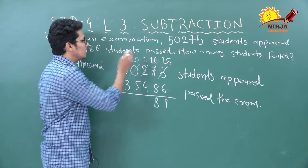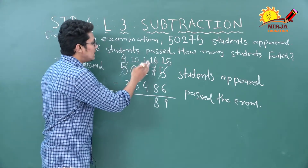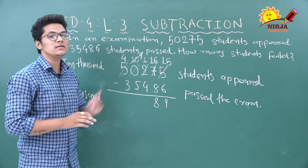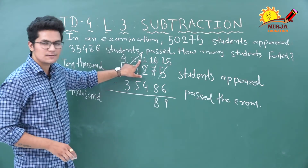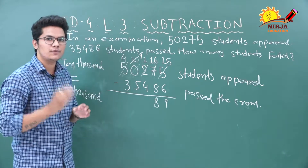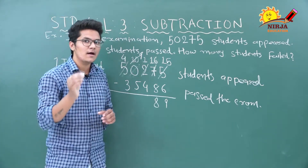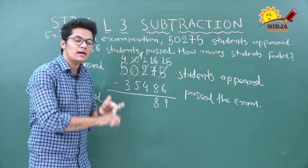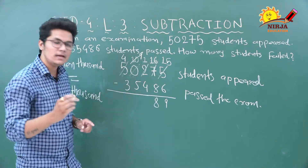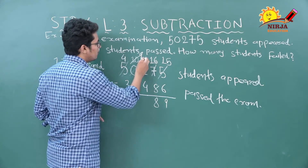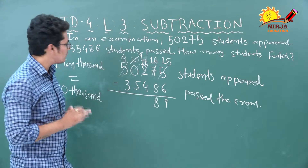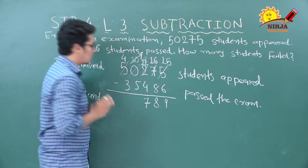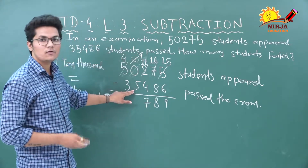Now we can borrow 1 thousand from the thousands column, leaving 9 thousands. One thousand equals 10 hundreds, and there is already 1 hundred, giving us 11 hundreds. Now we can subtract: 11 minus 4 equals 7. Thousands column: 9 minus 5 equals 4. Ten-thousands column: 4 minus 3 equals 1.